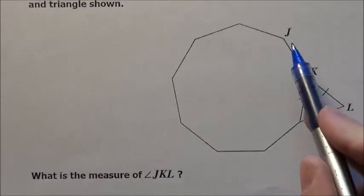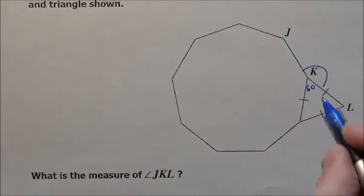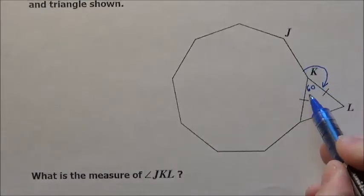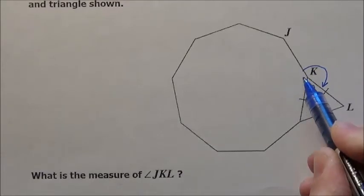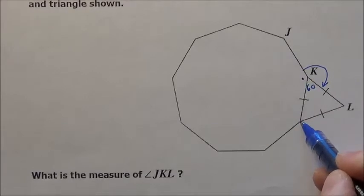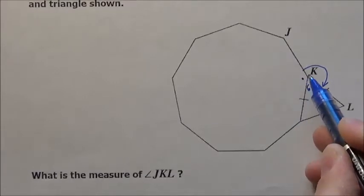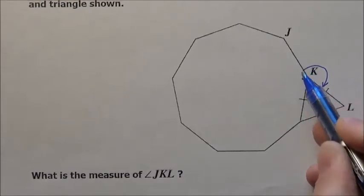It says what is the measure. It wants us to find J to K to L. It wants us to find this outside angle right here. How big of an opening is that? Now I know all the way around is 360. I've already got 60 here. So if I can find this angle right here, this JK down to here, if I can find that, I can simply add those together and then subtract from 360 and it will tell me how long that is.